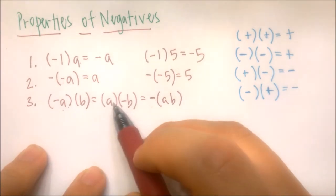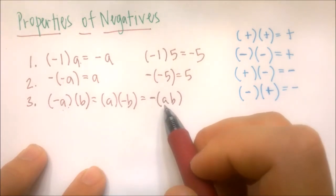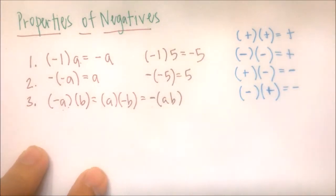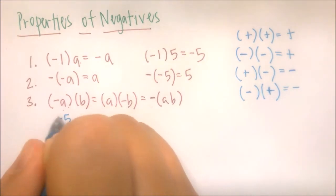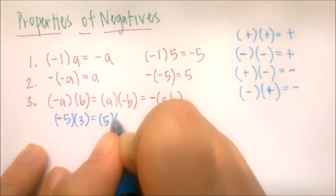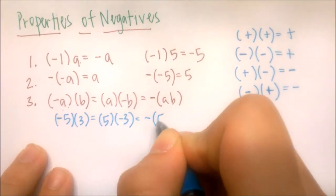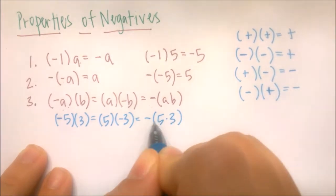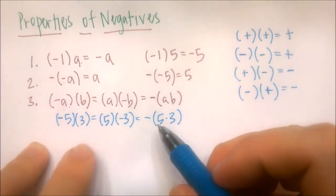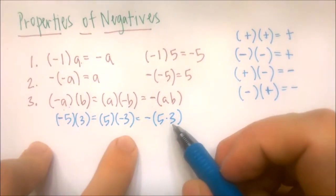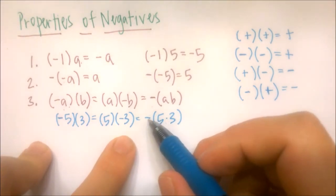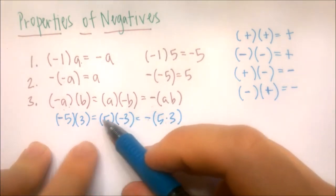So negative a times b is the same as a times negative b, or we can pull it to the front, multiply a and b, and then negate it. For example, negative 5 times 3 is the same as 5 times negative 3, or negative 5 times 3. The negative is like a negative 1, and since 1 is the multiplicative identity, it can be moved around without changing the value.